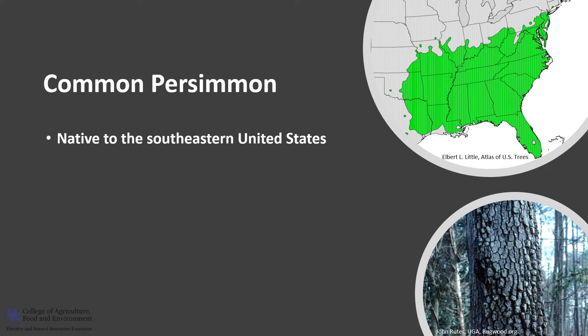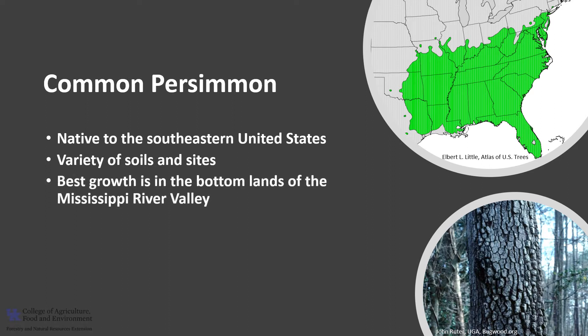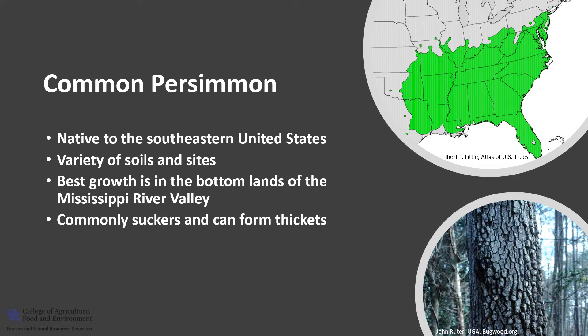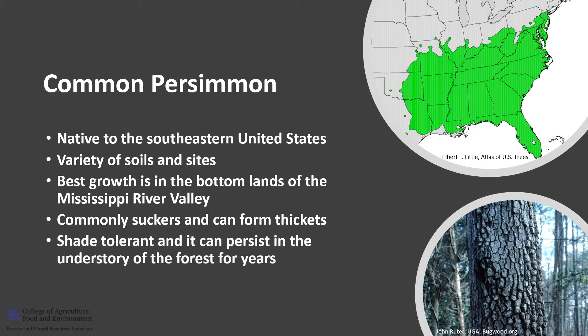Persimmon is native to the southeastern United States. It is found on a variety of soils and sites, but its best growth is in the bottomlands of the Mississippi River Valley. The tree commonly suckers and can form thickets, and it can be problematic in agricultural areas. Persimmon is considered shade tolerant and can persist in the understory of the forest for years.